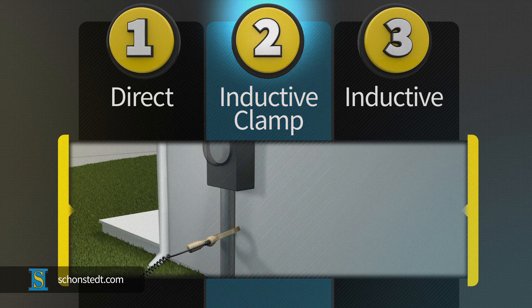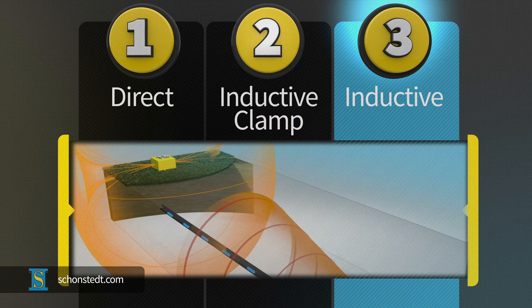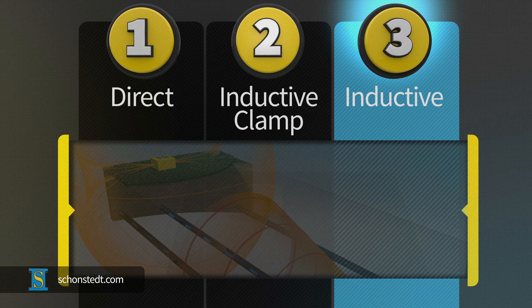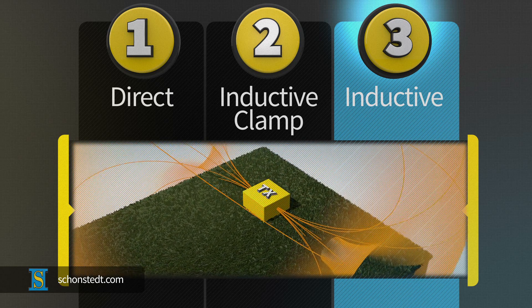The inductive mode is often referred to as the drop the box method because the transmitter's box is placed on the ground near the pipe or cable to induce the current. It produces far less current than direct or inductive clamp and should only be used when the other modes are not practical.